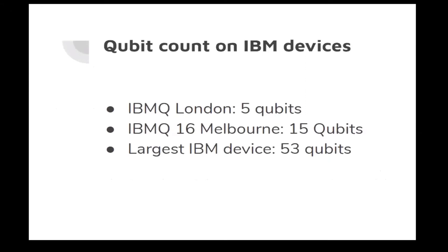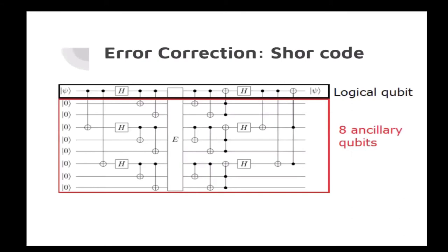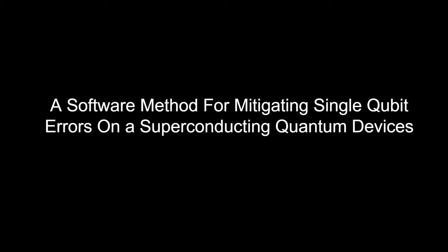IBM Q provides 15 devices for public access. The largest IBM device has 53 qubits. For example, IBM Q London enables 5 qubits, and IBM Q16 Melbourne has 15 qubits — the busiest and largest publicly accessible IBM device. Another error correction code is the Shor code, which maps eight ancillary qubits to the logical qubit — an example of a more complex circuit. Adding more ancillary qubits increases circuit complexity.